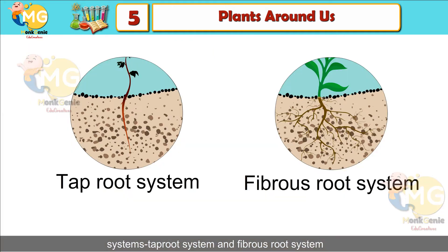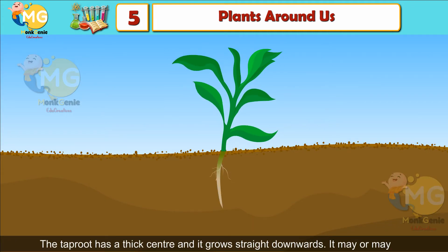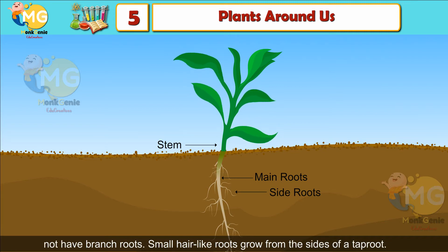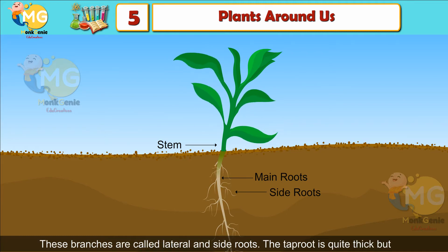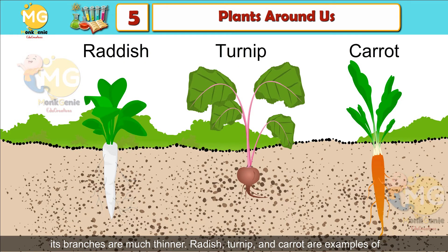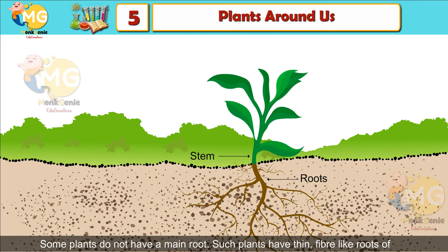The taproot has a thick center and grows straight downwards. It may or may not have branch roots. Small hair-like roots grow from the sides of the taproot; these branches are called lateral or side roots. The taproot is quite thick but its branches are much thinner. Radish, turnip, and carrots are examples of plants with a taproot.